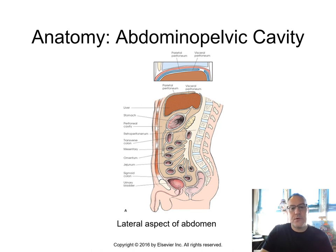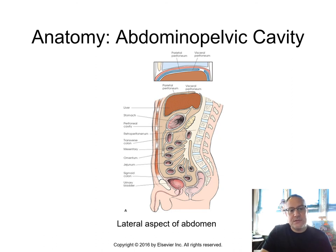Here we have a cross-section of the abdominal cavity showing the peritoneum and how it invaginates between and supports the organs. You can see this is a male — anteriorly in the pelvic region you've got the bladder, and posteriorly the rectum.